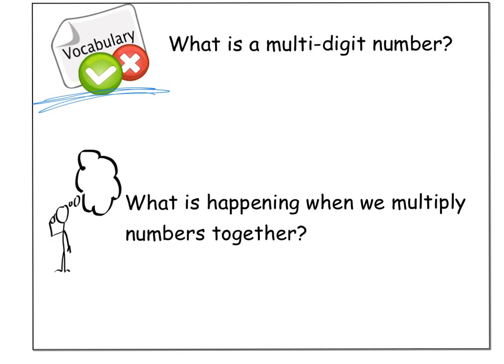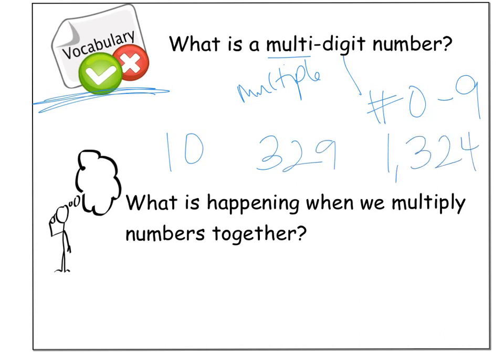What is a multi-digit number? Well, we know multi really means multiple, and digits are our numbers 0 through 9. So a multi-digit number is really just a number that's more digits than 0, 1, 2, 3, 4, 5, 6, 7, 8, 9. Even 10 is a multi-digit number, 326, anything that has multiple digits, more than one digit. So, 10, 329, 1,324, etc.